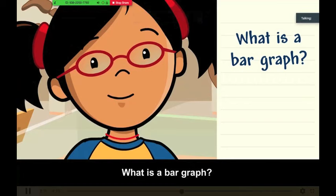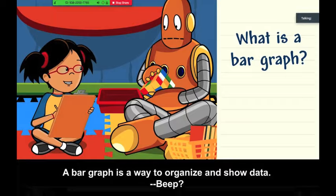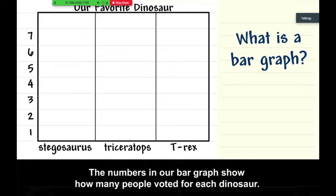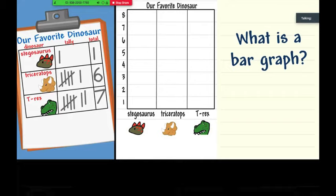What is a bar graph? A bar graph is a way to organize and show data. You can write the categories on the bottom. The three dinosaurs are the categories. Then you can write the numbers on the side. The numbers in our bar graph show how many people voted for each dinosaur.